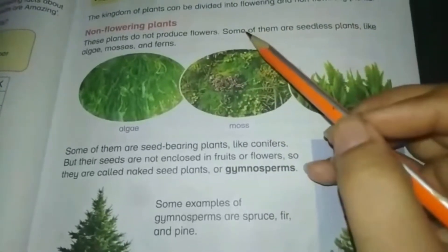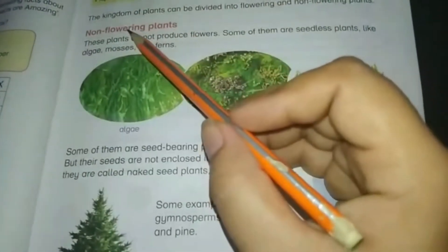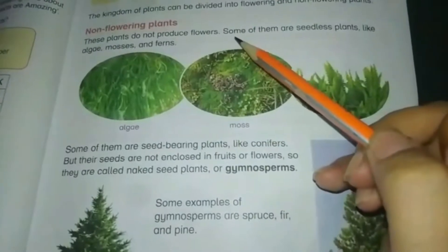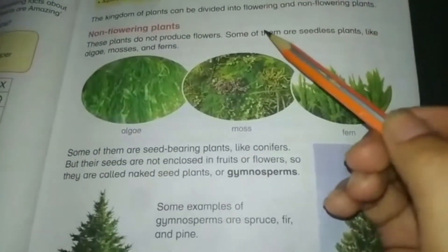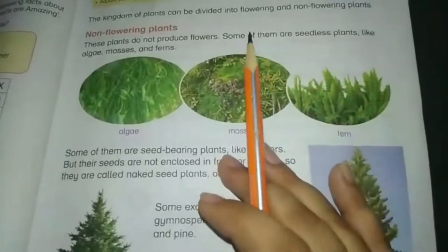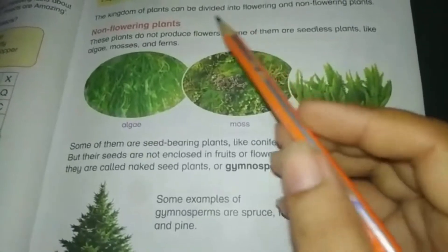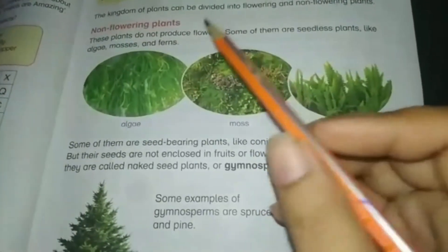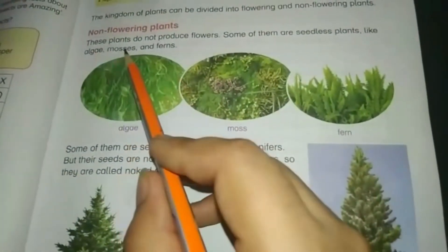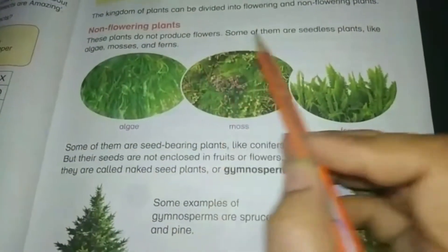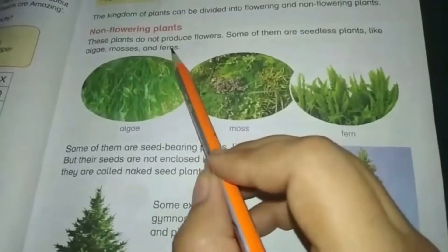What are the special features or characteristics of non-flowering plants? Non-flowering plants do not produce flowers. Some of them do not produce seeds, but some of them do produce seeds. However, their seeds are not enclosed in fruits or flowers, which is why these types are also known as naked seed plants or gymnosperms. Some of them are seedless plants, like algae, mosses, and ferns.